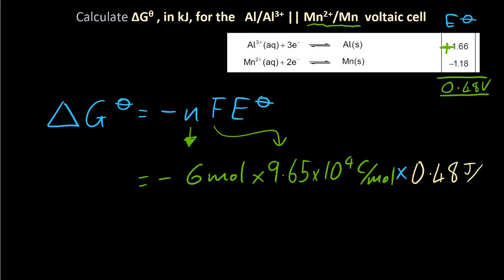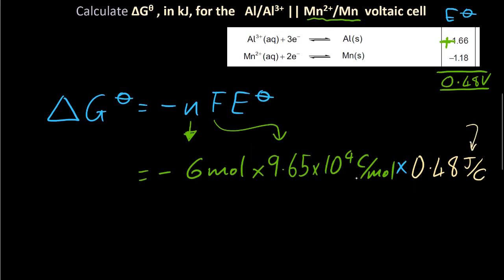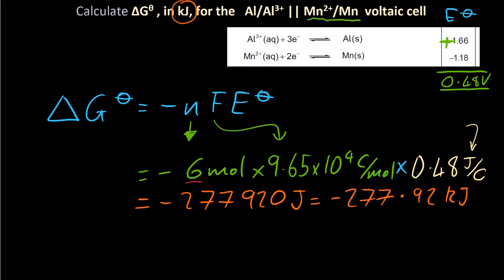So I'm going to put E cell at 0.48. Now a volt is actually a joule per coulomb, so I'm going to do some cheeky cancelling. That gives you minus 277,920 joules. We want it in kilojoules, so I'm going to divide by 1000 to give you minus 277.92 kilojoules. And let's follow the sig fig rules as well. This has infinite sig figs. It's exactly six electrons. Three sig figs, two sig figs. So your answer must have two significant figures, giving you minus 280 kilojoules.